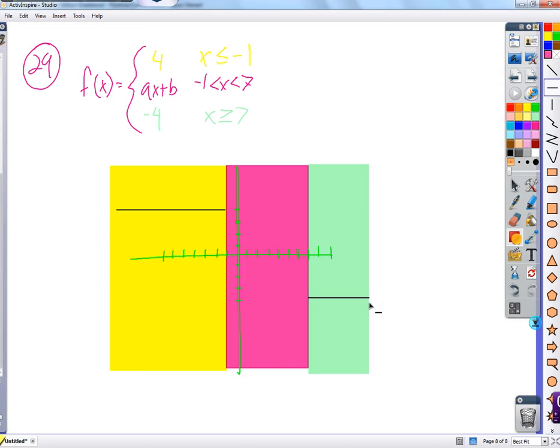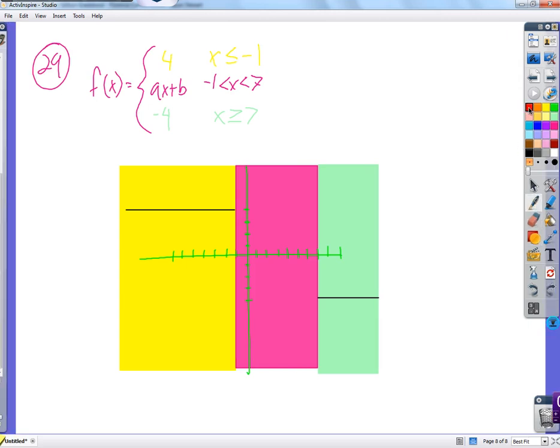Find constants a and b such that the function is continuous, which means there can't be any holes. It has to connect with the other two lines. If we want to think of it informally, draw it without picking up our pencil. We need to find a straight line that connects right there to right there.